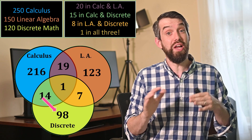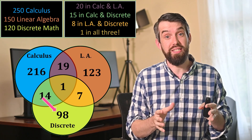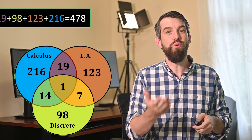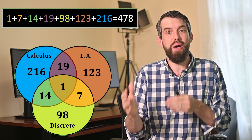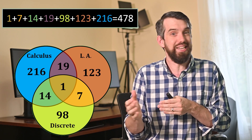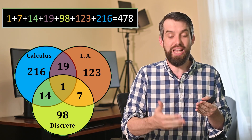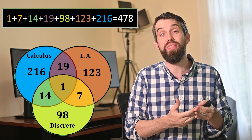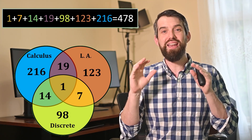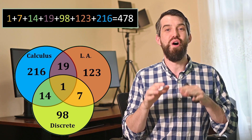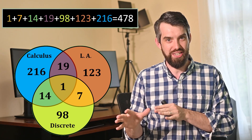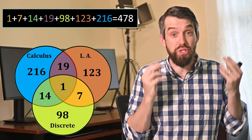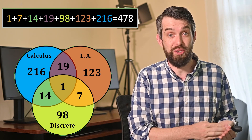So I've filled out all the possible places in this Venn diagram, and now I can get an answer. To find the total number of students, I just add up all these numbers: 1, 7, 14, 19, 98, 123, and 216. I added that up and got 478. So that's how many individual students I am teaching this semester.